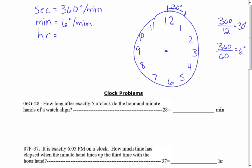For the hour hand, it takes a full 60 minutes to go from one hour mark to the next, so in one minute that's one-sixtieth of 30 degrees, giving you 0.5 degrees per minute. Instead of figuring that out each time, it's best to just memorize those values. The ones you'll see most often are minutes and hours, but it's good to know seconds as well.